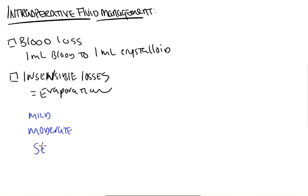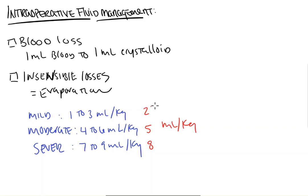and severe. And the replacement for each of these is 1 to 3 ml per kg, 4 to 6 ml per kg, and 7 to 9 ml per kg. And so, the magic numbers here are 2, 5, and 8 ml per kg for insensible losses depending on the type of surgery. A mild type of surgery would be some type of laparoscopic surgery or small hernia repair, whereas a moderate might be an open coli or open appendectomy, and severe ones would be open bowel resections or big exploratory laparotomies where there's really a lot of exposure.